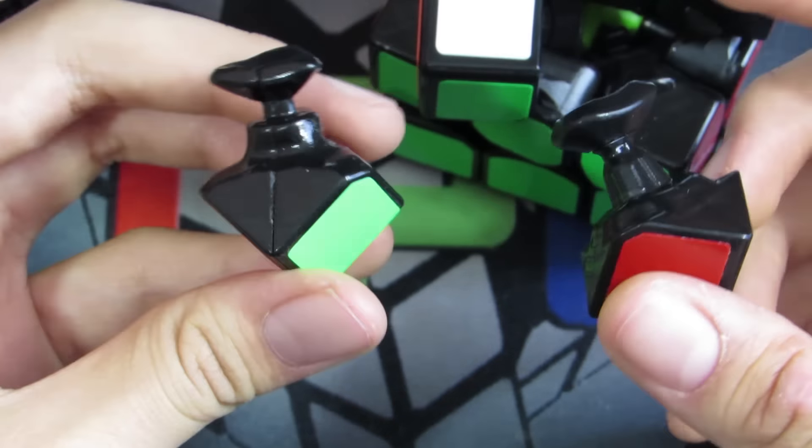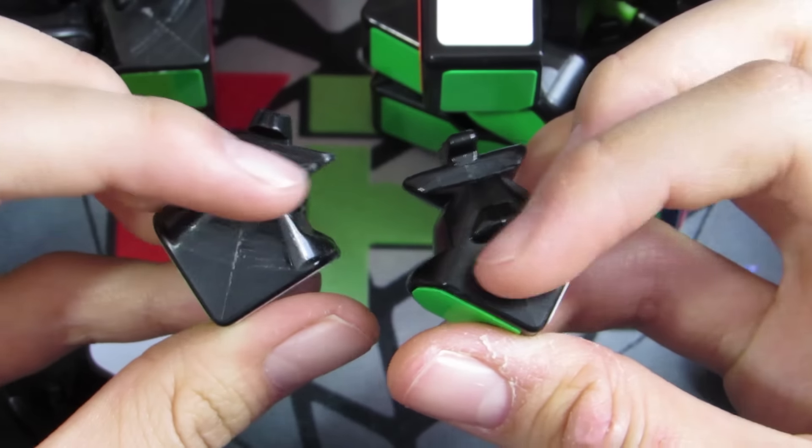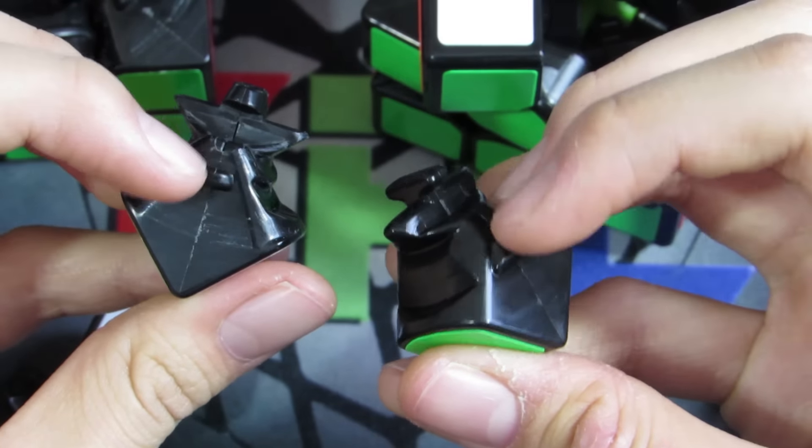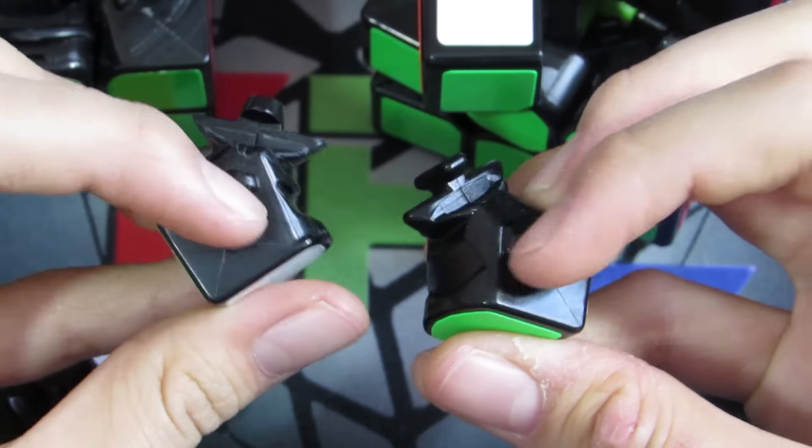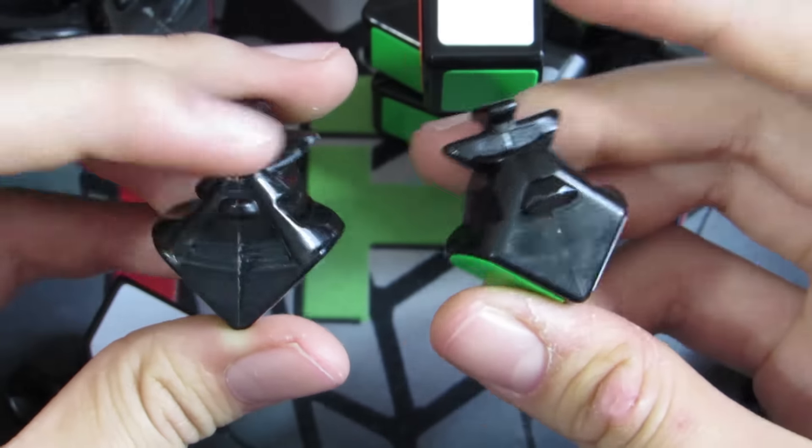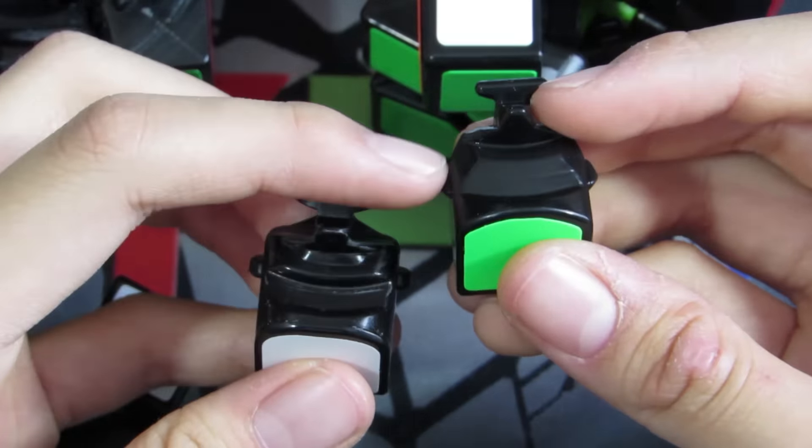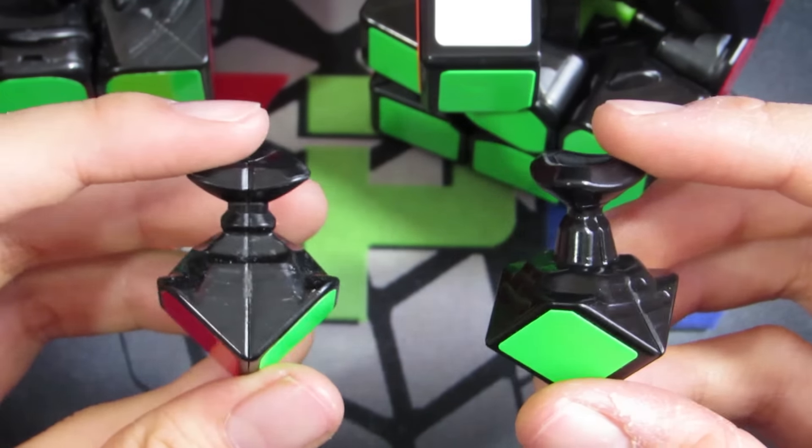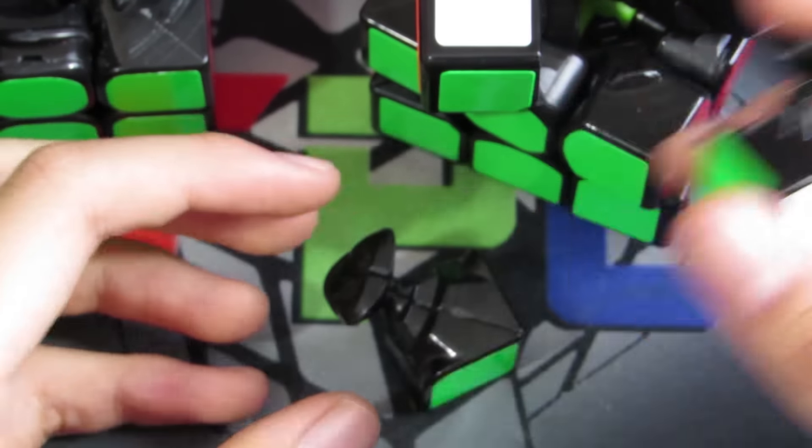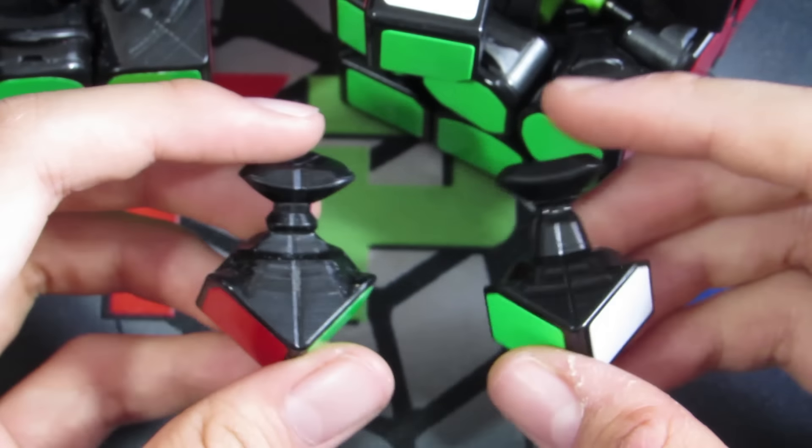Now, this cube does take some things from the Yushin 3x3, which is most prominently this little nub-type thing on the edge of the piece. It's a little bit bigger on the Tornado, obviously, but the first time we see this little thing here is on the Yushin. But there's like no similarity between the Tornado corner and the Yushin corner. I mean, they have the same shape, but every corner ever has the same shape.